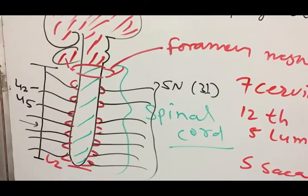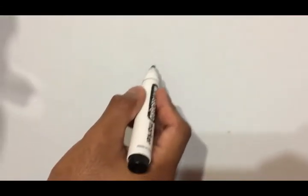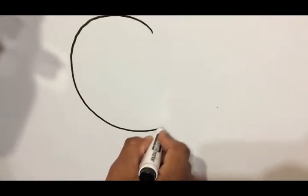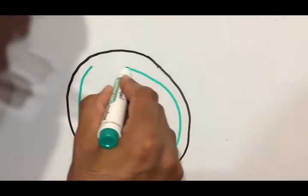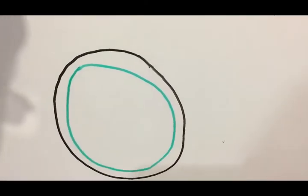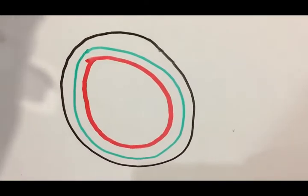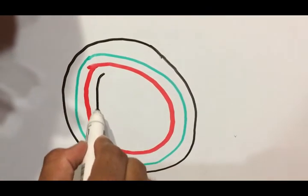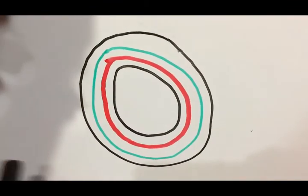Now I am drawing a cross-sectional diagram of the spinal cord. I am cutting the spinal cord to show its cross-section. Here is the vertebral canal, and inside we can see the meninges of the spinal cord, which we will discuss, and the spinal cord itself.